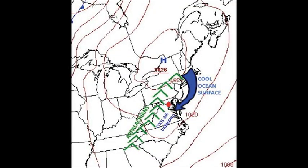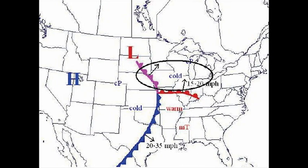Cold air damming occurs when a zone of sub-freezing air remains at low levels along the slopes of a mountain range with a layer of above-freezing air aloft. Ice storms produced by the warm front or occluded sector of a cyclone typically have an area of icing north of the freezing line, due to warm air advection positioned over a shallow layer of cold air at the surface.